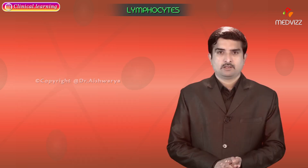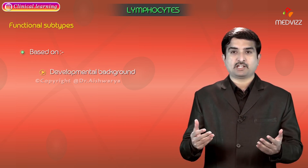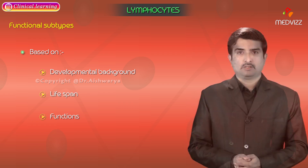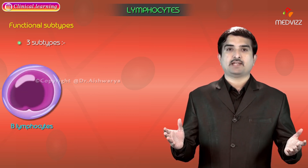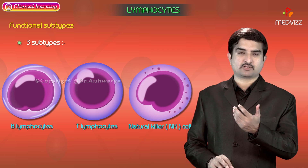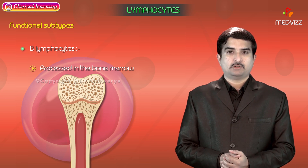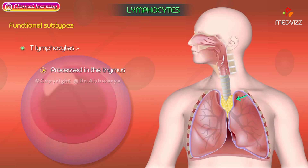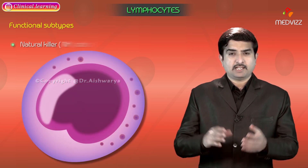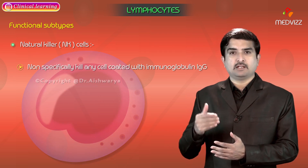The cytoplasm does not contain any visible granules. Lymphocytes have functional subtypes based on their developmental background, lifespan, and functions. Small lymphocytes are classified into three subtypes: B lymphocytes, T lymphocytes, and natural killer cells. B lymphocytes are processed in the bone marrow and concerned with humoral immunity, whereas T lymphocytes are processed in the thymus and concerned with cellular immunity.